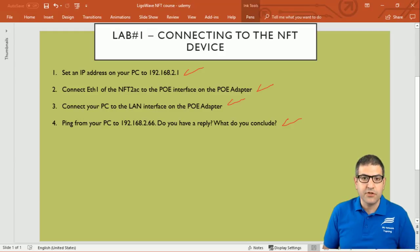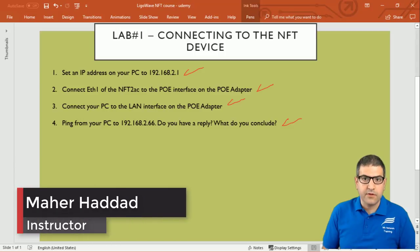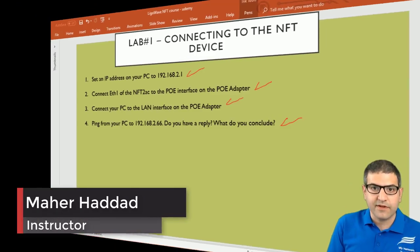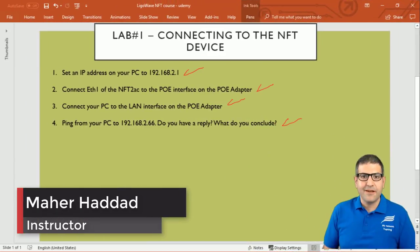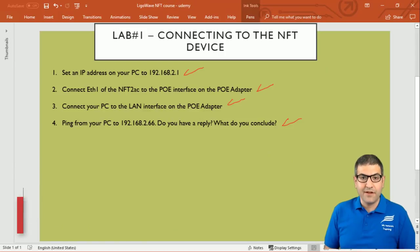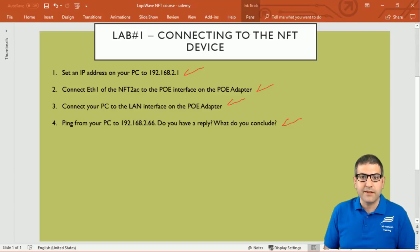We have completed point number four and concluded that the DHCP fallback IP address is 192.168.2.66 — the address needed to enter the router and make configuration. This lab was very short but very important, as we now know how to connect to the router and make configuration. I hope this lab was informative for you and I will see you in the upcoming lecture.